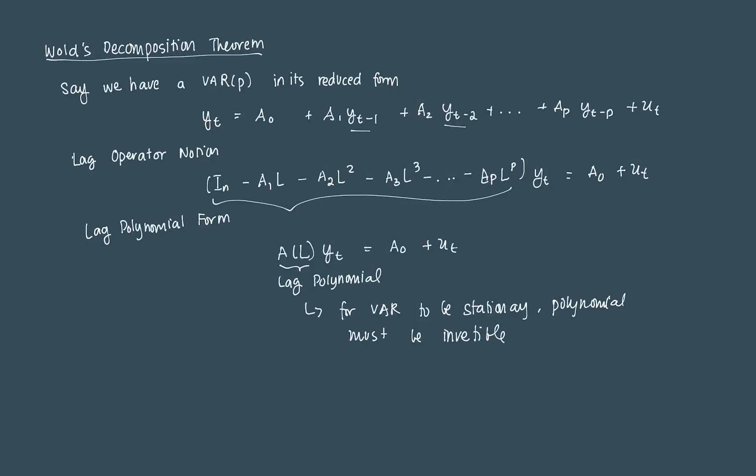That polynomial is invertible if all the NP roots or the roots of that polynomial are outside of the imaginary unit circle. This is a generalization of the characteristic equation and the conditions of stationarity in an AR(p) model. In particular, it means that the determinant of that polynomial should not be equal to zero since it's invertible.